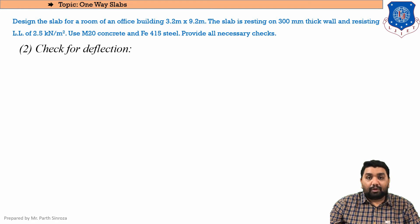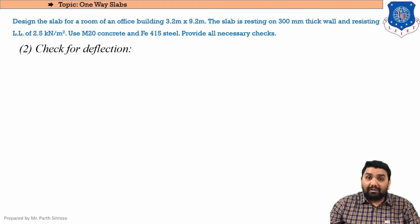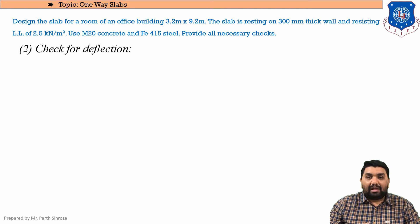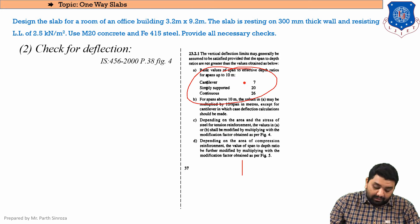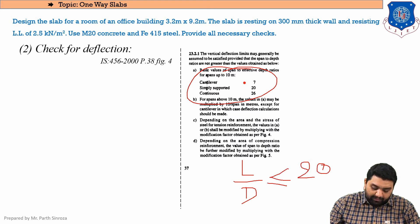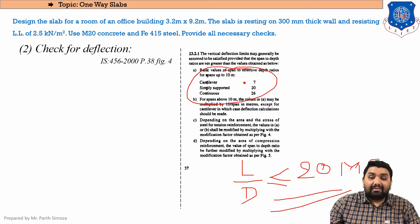The second check is the check for deflection — checking the L/d ratio. We started the sum assuming pt = 0.6, but the actual calculated pt is 0.21 something. We will use the actual pt and the provided Ast to find the actual L/d ratio. Referring to IS 456 page 38, for a simply supported slab the allowable condition is L/d ≤ 20 × MF. We need to prove LHS ≤ RHS.